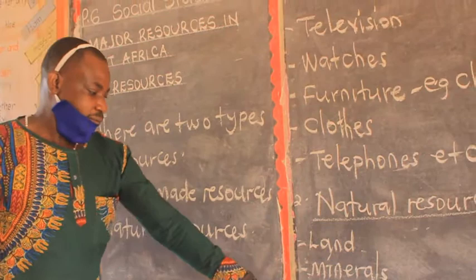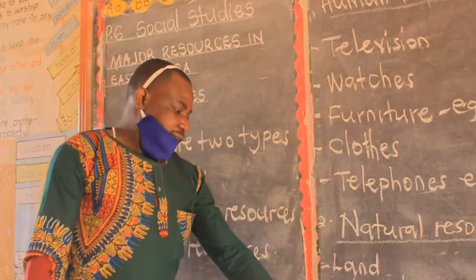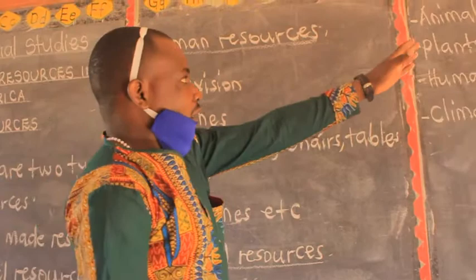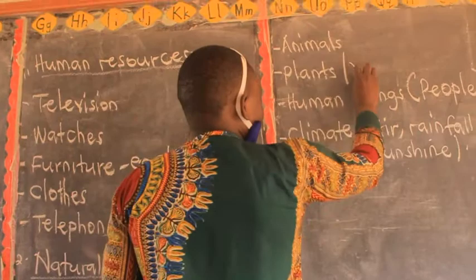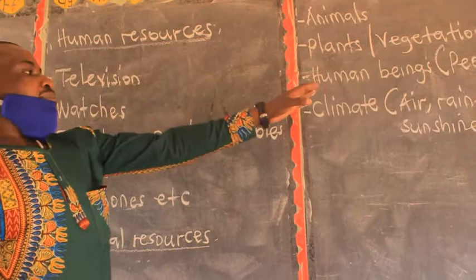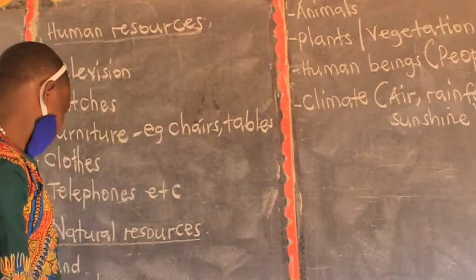We use water at home, in industries, and for many other things. We also have animals, plants or vegetation — such as natural forests — and human beings or people, who are also considered a natural resource. Climate is also a natural resource.